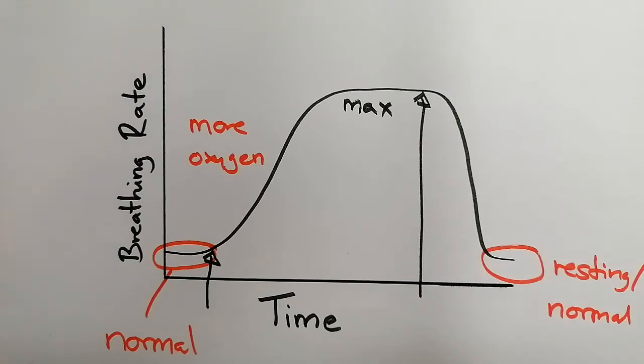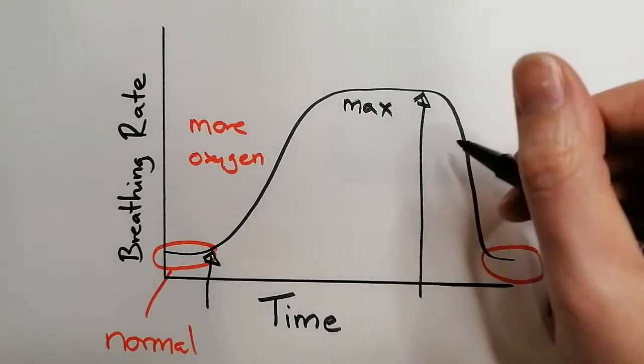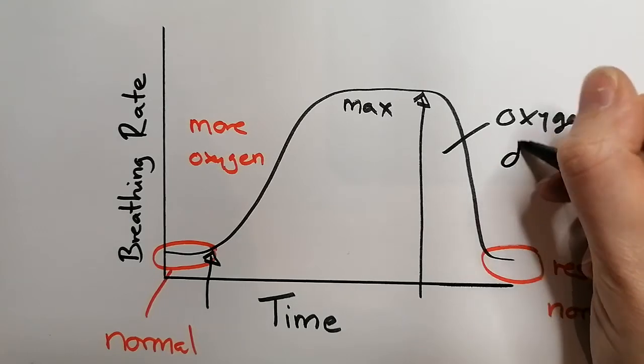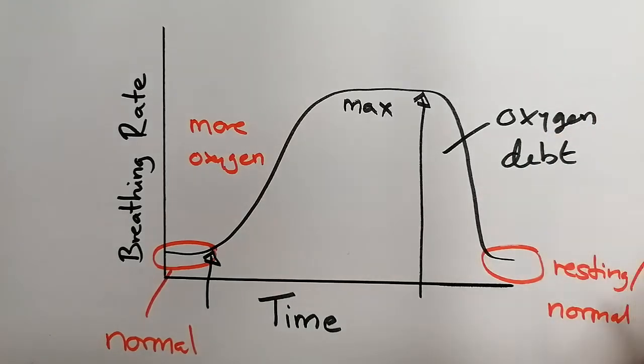And the reason why there's that delay is something called oxygen debt. So this delay is due to our oxygen debt. And to work out what on earth that means, we need to go back to our two different types of respiration.